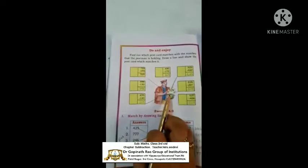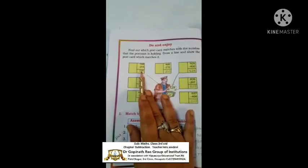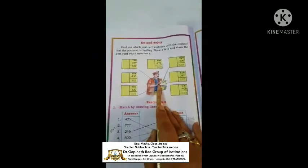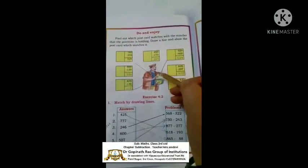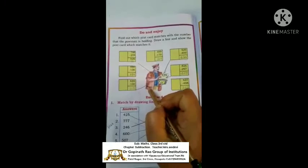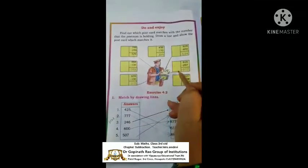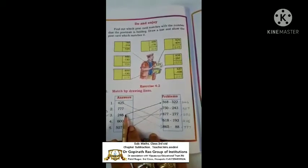Do and enjoy — this is an activity. The postman is holding a card with the number 529. You have to subtract and find the differences. Which number pairs give a difference of 529? You have to match them with this postman. Here the difference is 529 — it matches. Here the difference is 329, so it will not match. I have already subtracted for you all because doing it during a recording takes time. Only these four will match — one, two, three, and four will match. This is homework for you all.